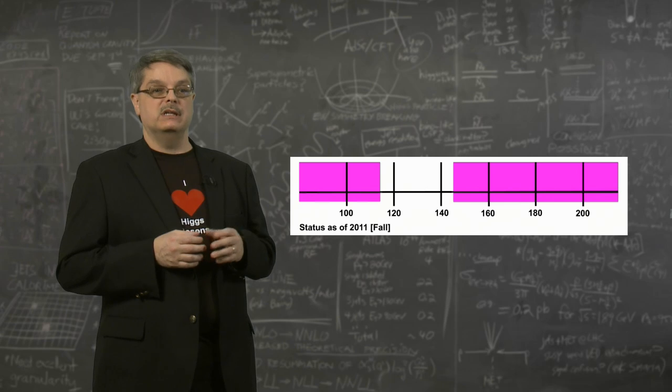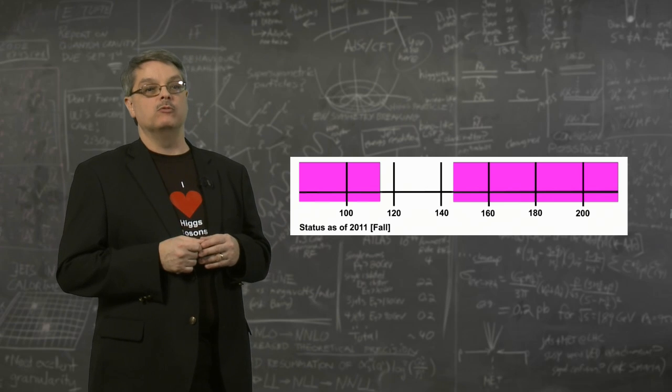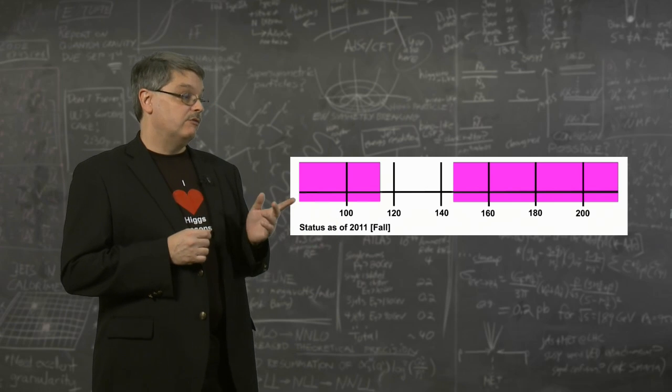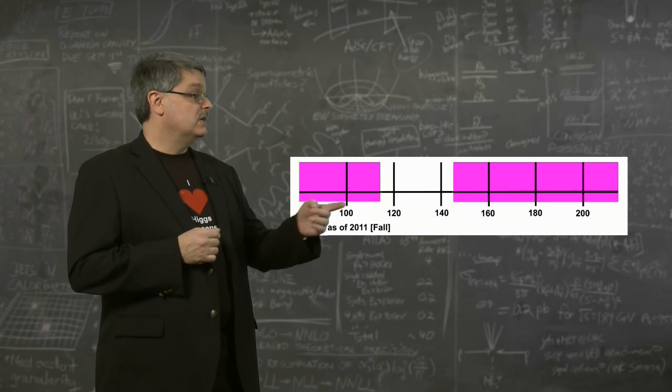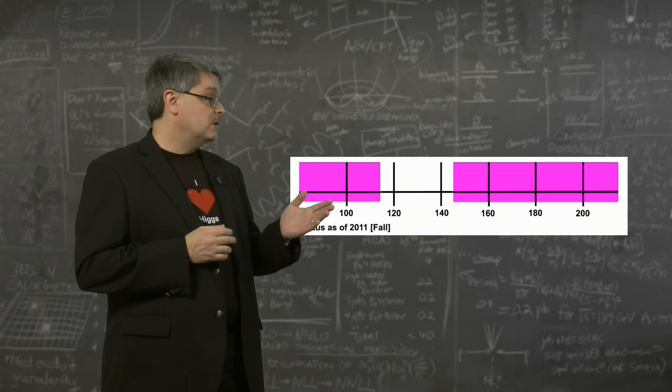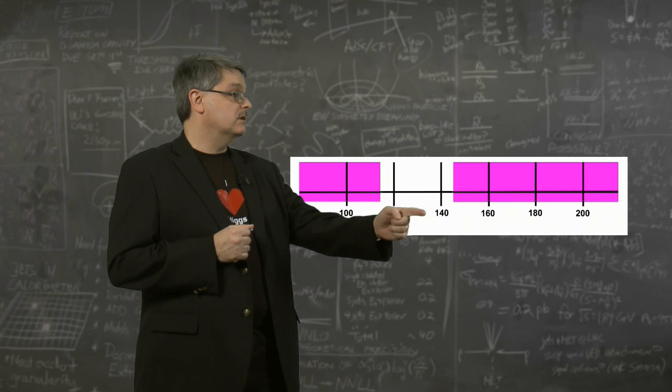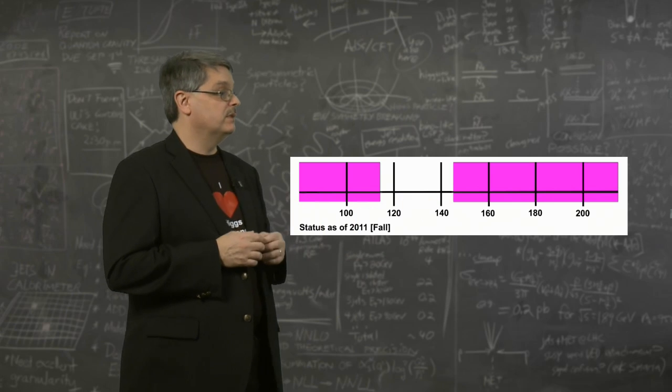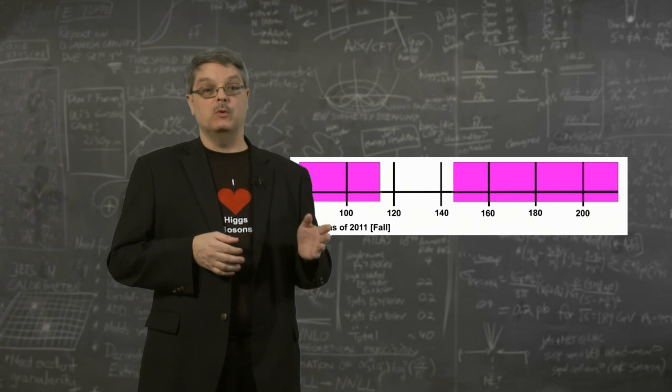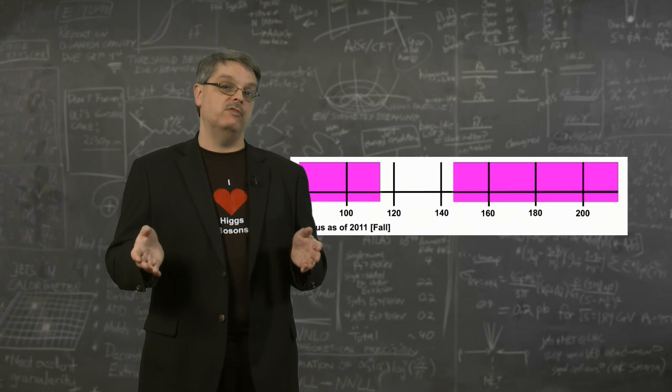Using the methods that I've described here, previous studies have ruled out some possible values of the Higgs boson mass, as shown by the pink regions. For instance, we know the Higgs boson can't have a mass below about 115. These experiments have also excluded masses above about 145. This means the most likely range for the Higgs boson is somewhere between 115 and 145.